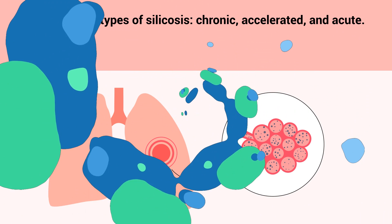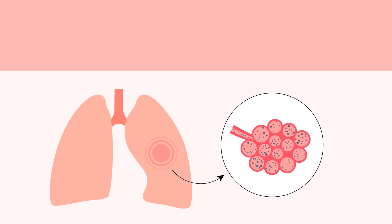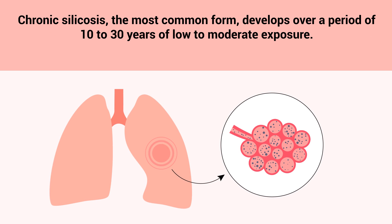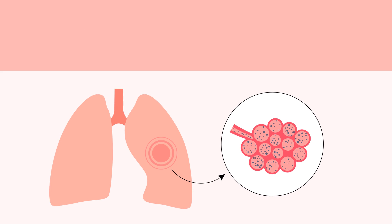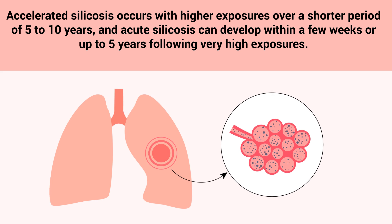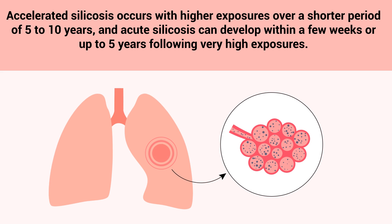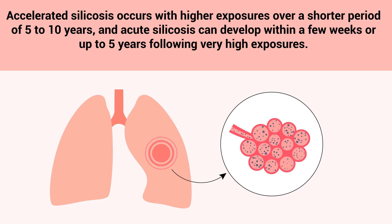There are three types of silicosis: chronic, accelerated, and acute. Chronic silicosis, the most common form, develops over a period of 10 to 30 years of low to moderate exposure. Accelerated silicosis occurs with higher exposures over a short period of 5 to 10 years, and acute silicosis can develop within a few weeks or up to 5 years following very high exposures.